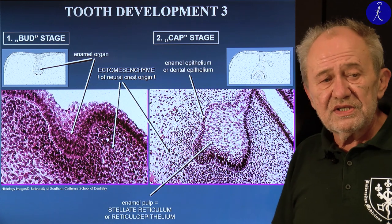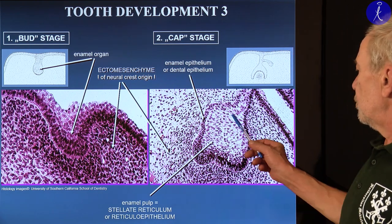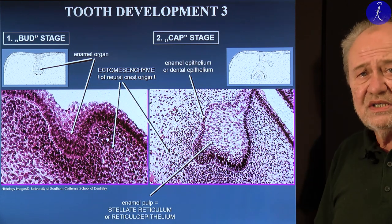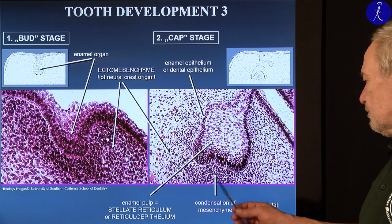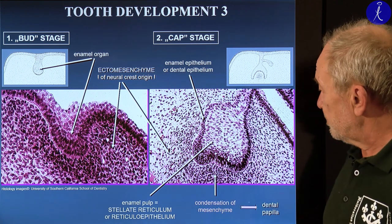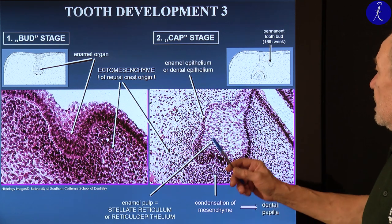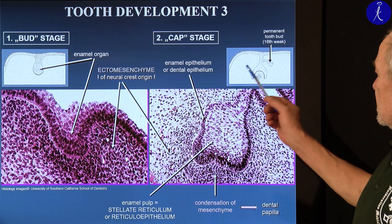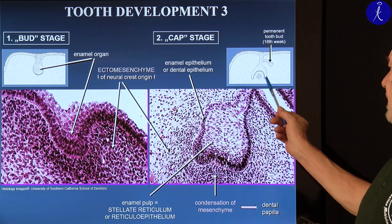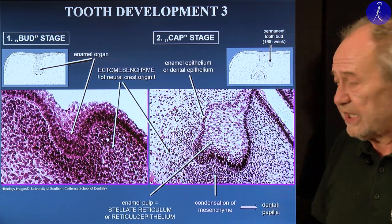In the stellate reticulum, cells resemble connective tissue cells but are kept together by junctions, with only fluid accumulating between them — no intercellular matrix. The condensed mesenchyme presses inward into the ball and becomes the dental papilla. At the 16th week, on the side toward the tongue or palate relative to the dental cap, the primordium of the permanent tooth appears. So on exam slides you can frequently see a beautifully developing tooth alongside the beginning of the permanent tooth primordium.